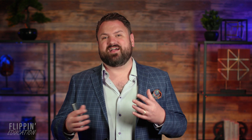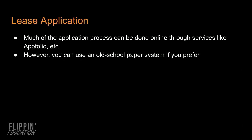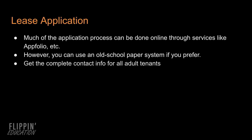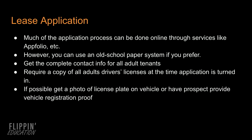This gives you an idea of whether or not you want to be leasing your property to this person. Now let's talk about the lease application. Much of the application process can be done online through services like AppFolio and others on the web. However, you can just use the old school paper system if you prefer. Get complete contact information for every adult tenant and require a copy of all adults' driver's licenses when the application is turned in. If possible, get a photo of the license plate on their vehicle or have the prospect provide vehicle registration proof. The last thing you want is for your rental property to become a vehicle junkyard.